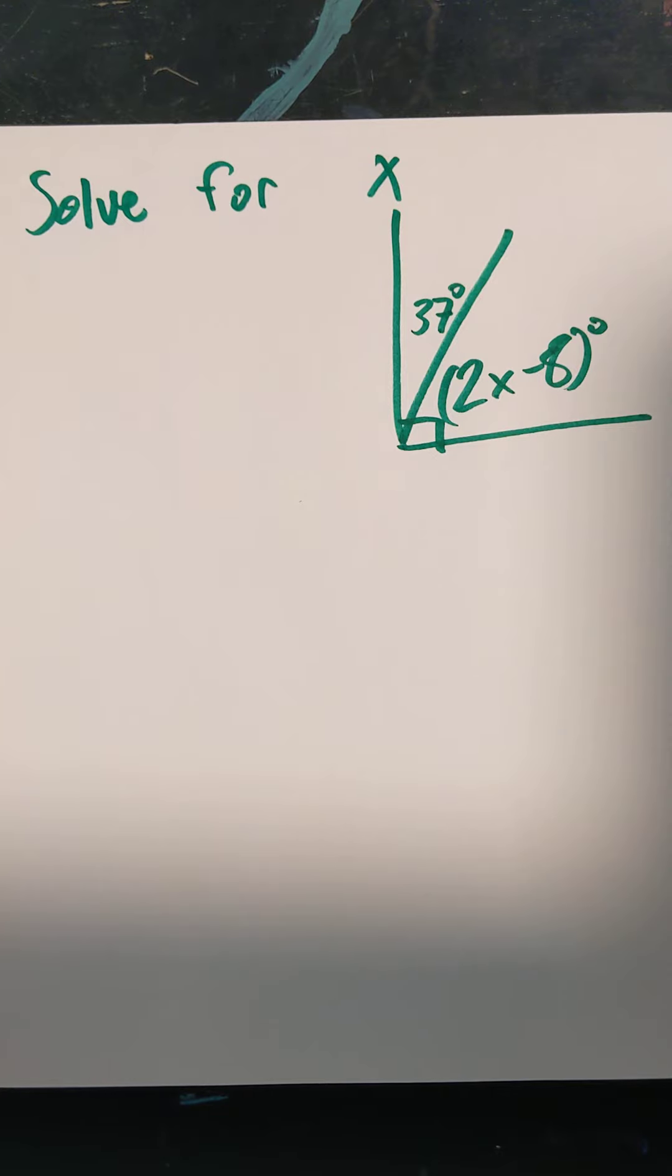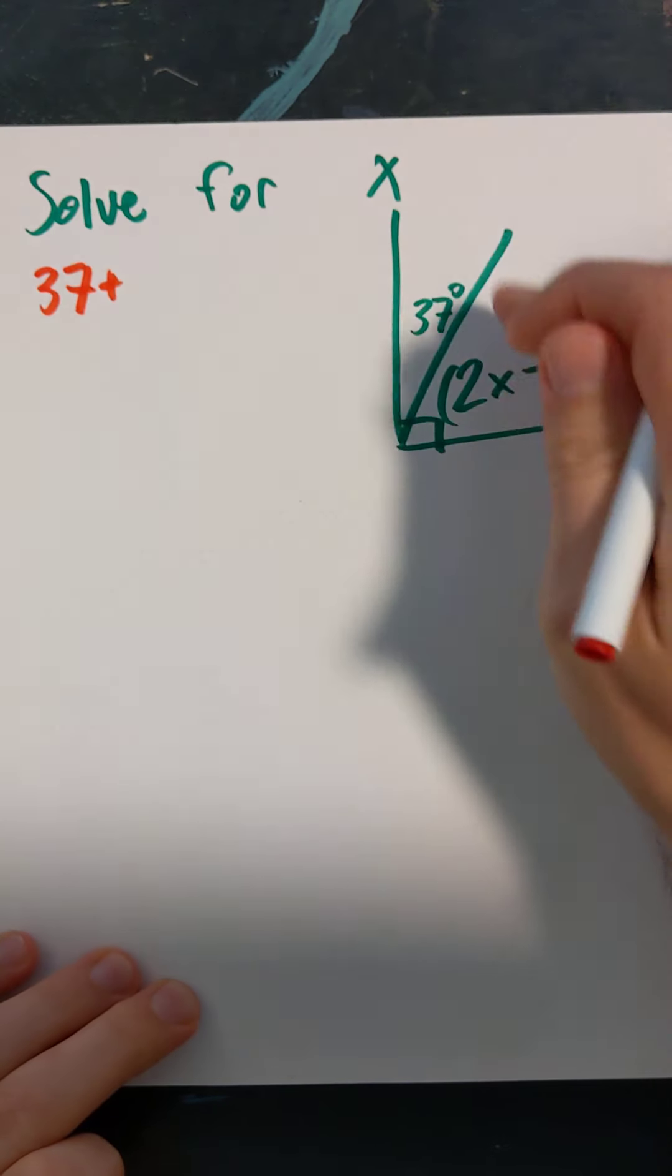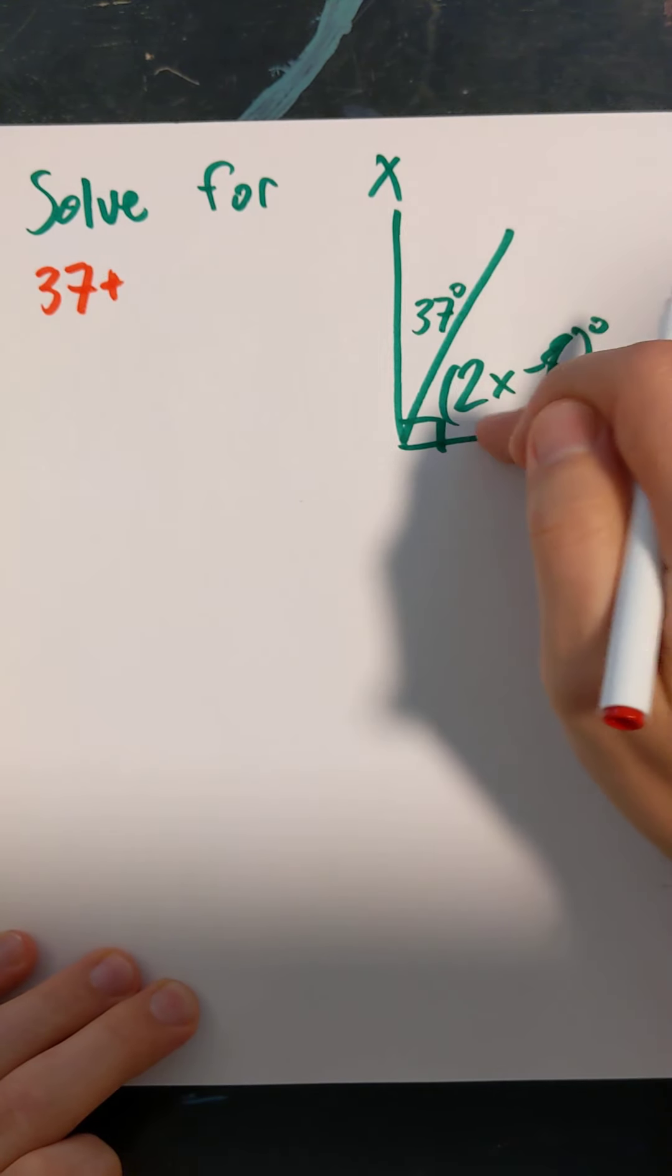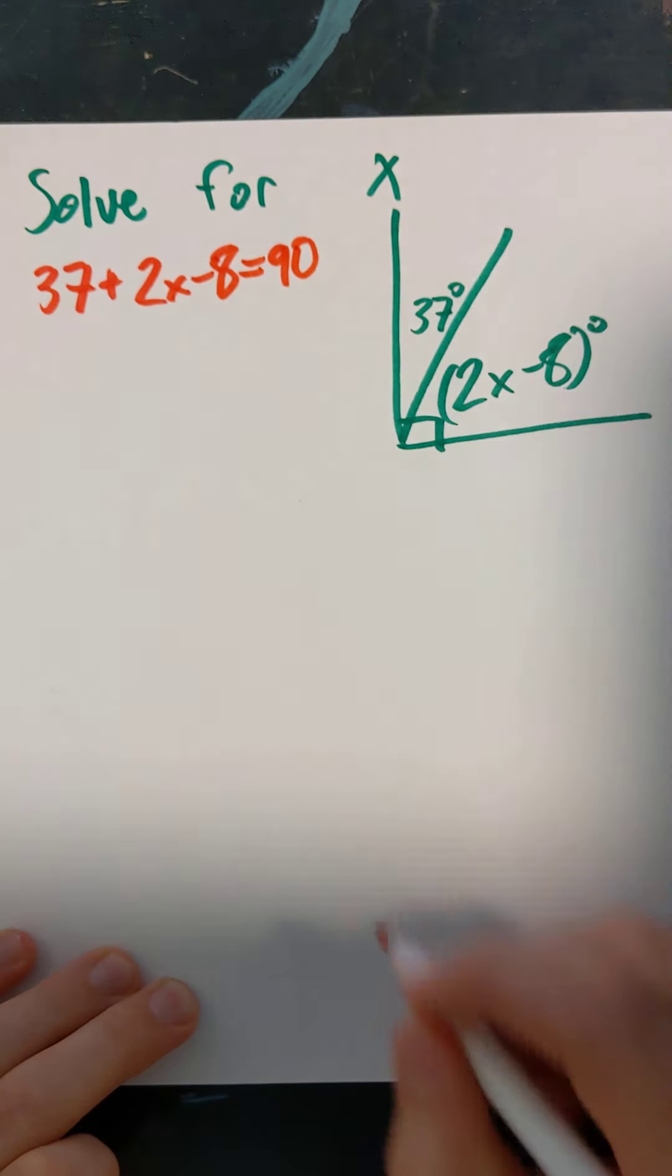Now, what did we say? It adds up to 90, right? So let's add it up to 90. 37 plus whatever this is, 2X minus 8, adds up to 90.